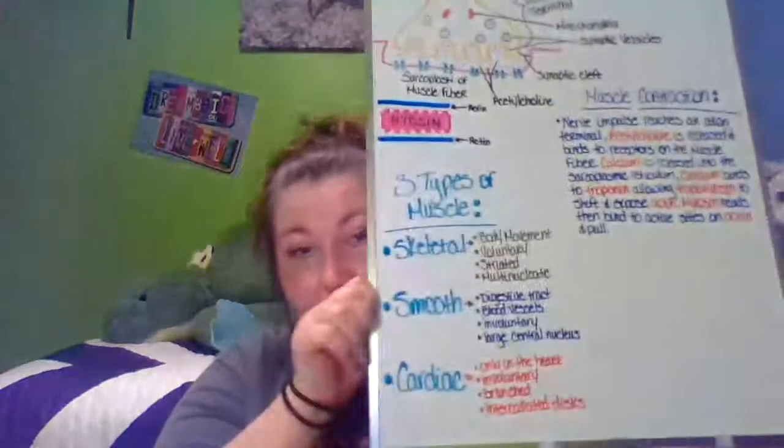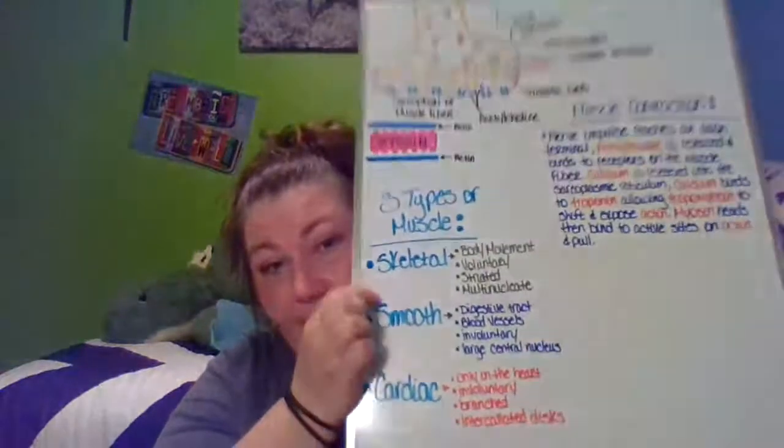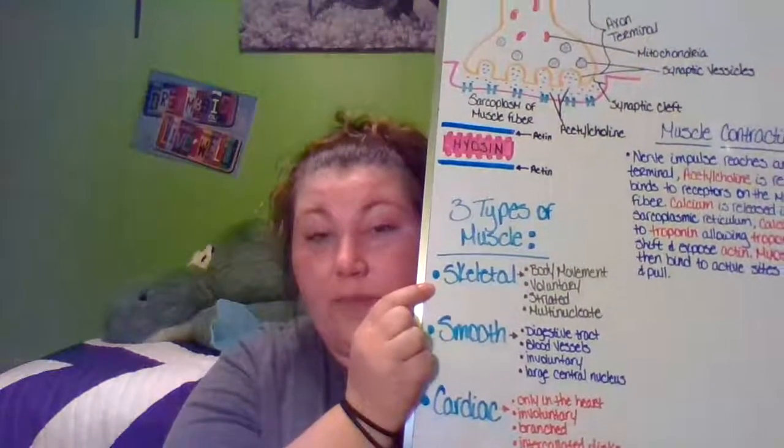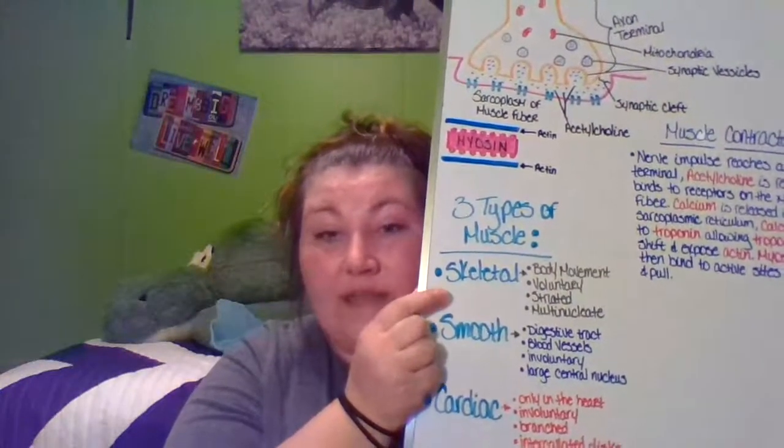The other thing I want to go over is the three different types of muscle. You've got skeletal muscle, which is what you're looking at for the labeling, smooth muscle, and cardiac muscle. Each of the three muscle types has distinguishing characteristics. Skeletal muscle is attached to bone, used for body movement, it is voluntary, the muscle fibers are striated, and it is multinucleate.